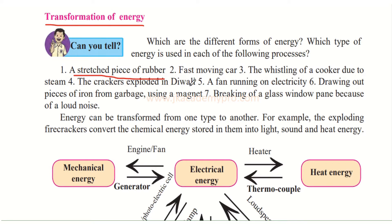The crackers exploded in Diwali — during Diwali when you burst crackers you light them using fire, so this is because of heat energy transferred into the crackers that causes them to explode. A fan running on electricity: when you switch on a fan, electrical energy is transferred to the fan and causes it to move. Drawing out pieces of iron from garbage using a magnet — huge magnets remove pieces of iron and metal, so this is because of magnetic energy. Breaking a glass window pane because of a loud noise: sound energy, if intense enough, can cause glass windows to break.